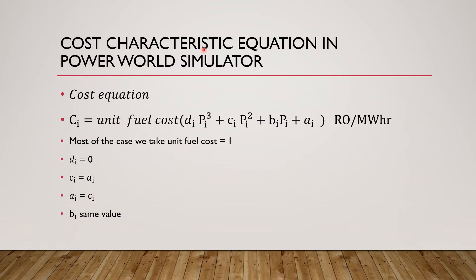In Power World Simulator they use a cubic cost model with constants D, C, B, and A. In our problem we use a quadratic cost model with only AI, BI, and CI. We take D equal to zero since it is a very small value. There is one important difference: what we call C in our problem, they use as A; and what we call A, they use as C. B remains the same. With this coefficient mapping we can proceed to simulation.